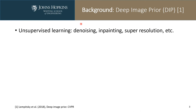In this study, we use deep image priors to correct image inhomogeneity. Deep image priors is an unsupervised learning method. It has been used in many applications, such as denoising, image inpainting, and super-resolution.